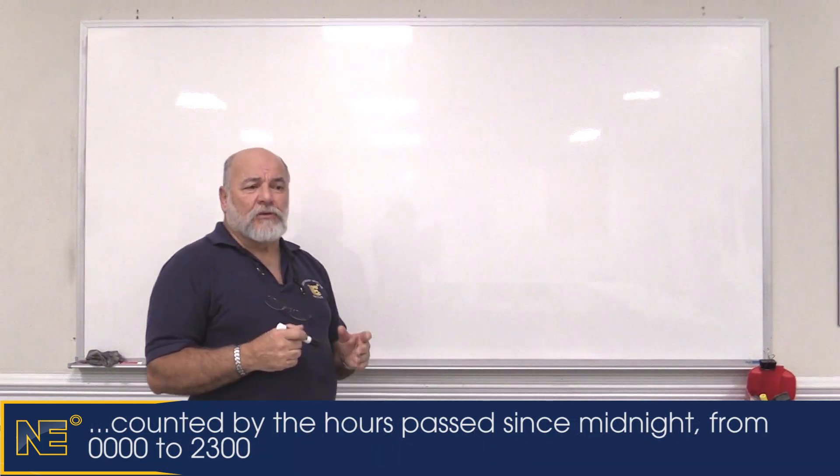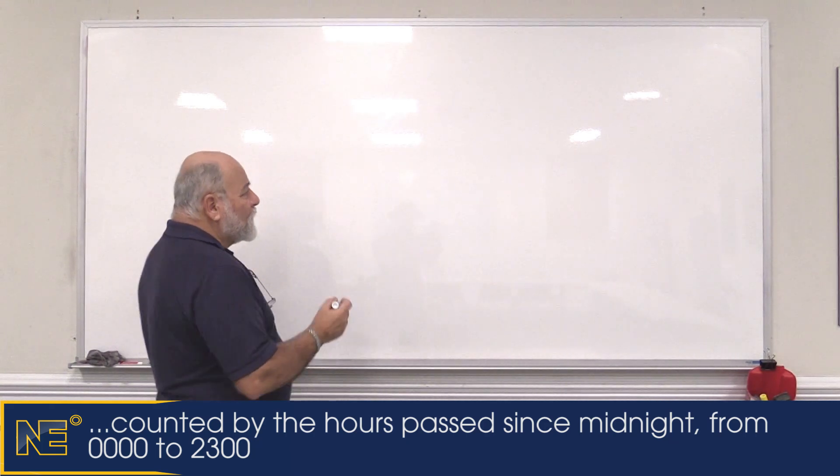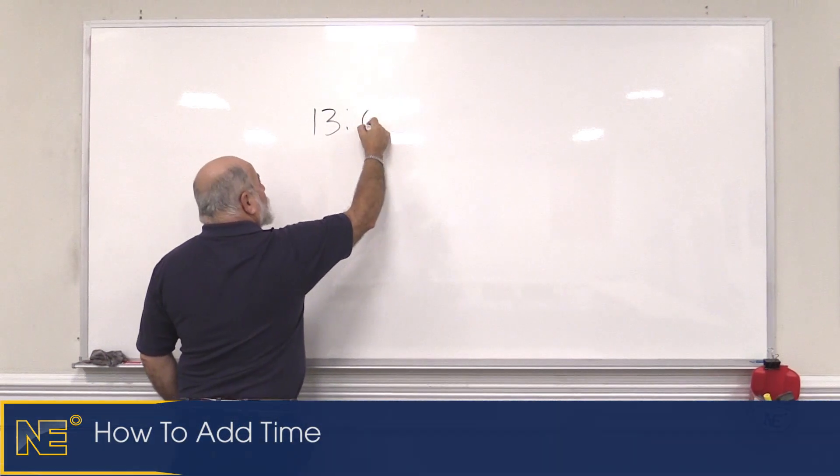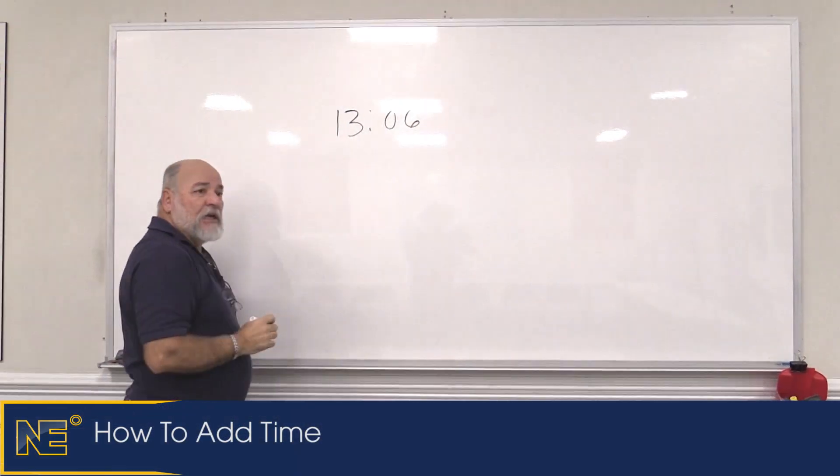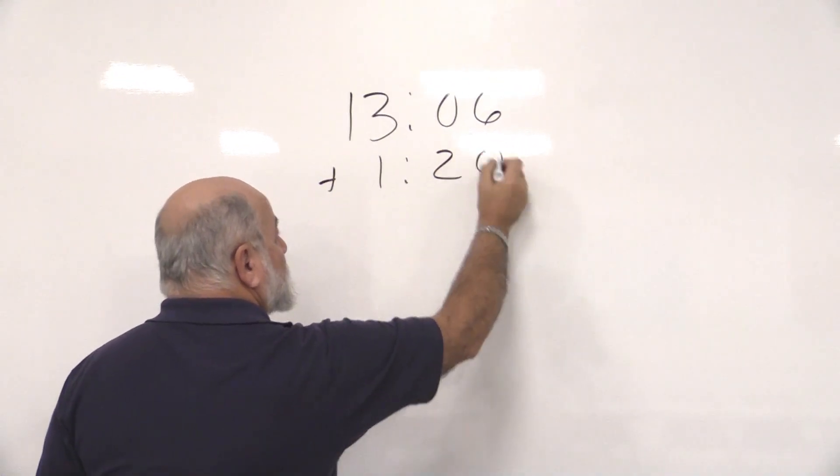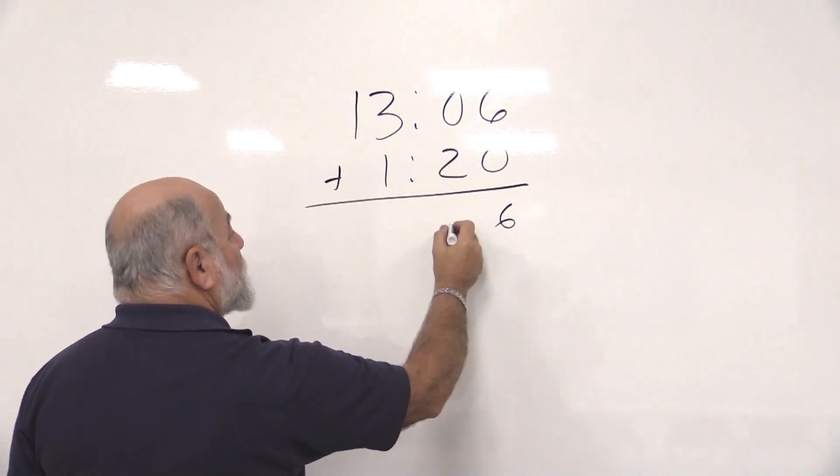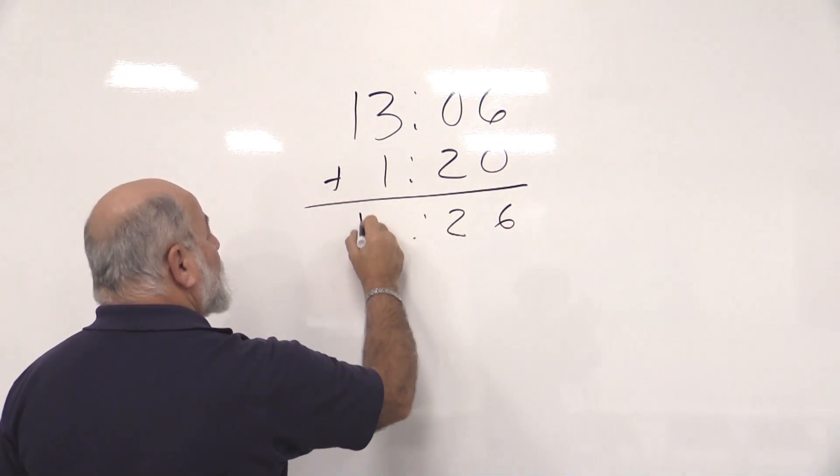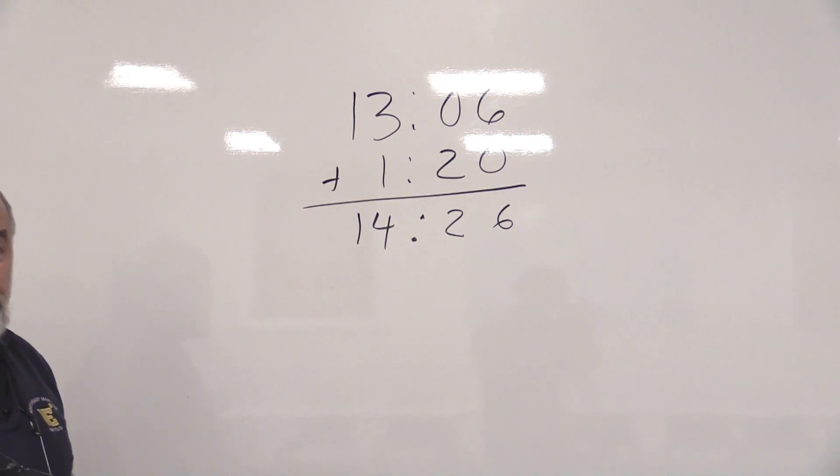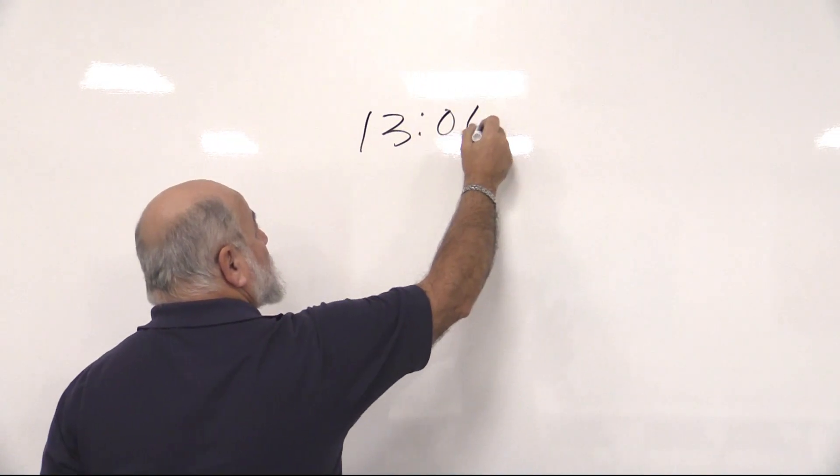So what we need to do is talk about how we add and subtract time. We'll do a couple of quick little problems. First, let's say that we have a time of 1306 and we need to add an hour and 20 minutes. We simply add 6 plus 0 is 6, 0 plus 2 is 2, 13 plus 1 is 14. 1426 would be our time. Easy, no problem.